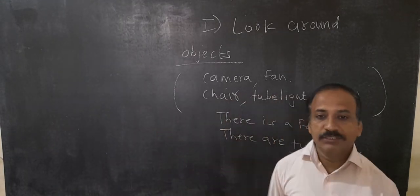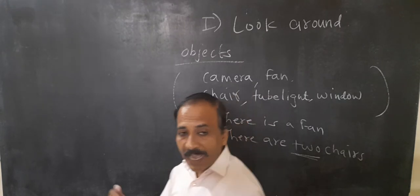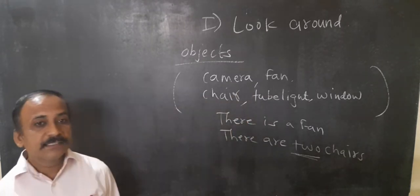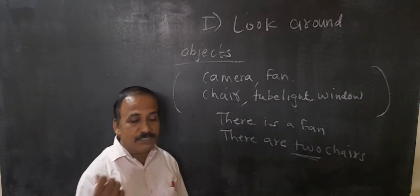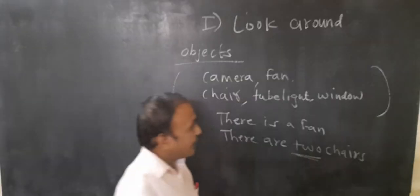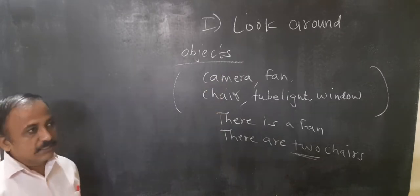There are two windows. There is a bag. There is a glass. There are three tables. So this way you can say that around you.